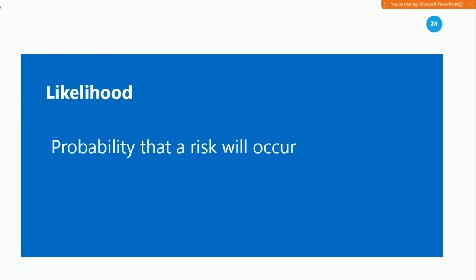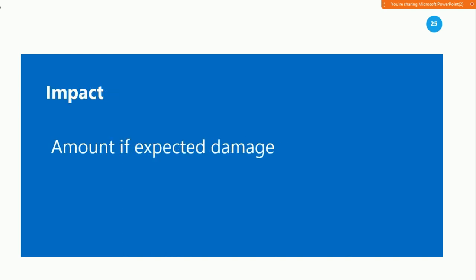The impact of a risk is the amount of damage that will occur if the risk materializes. For example, an earthquake might cause severe damage to a data center, while a rainstorm might not cause any damage at all. When performing risk assessments, we have two different categories of techniques that we can use to assess likelihood and impact.